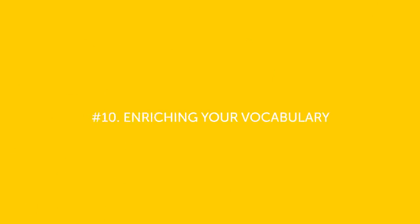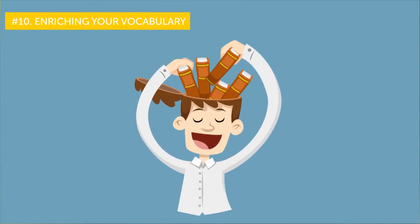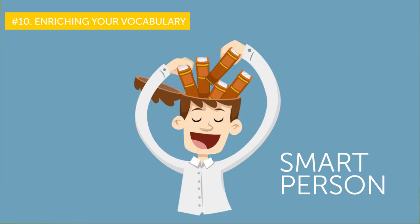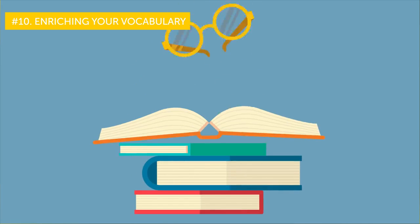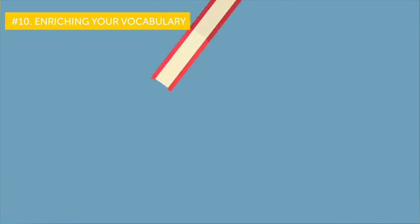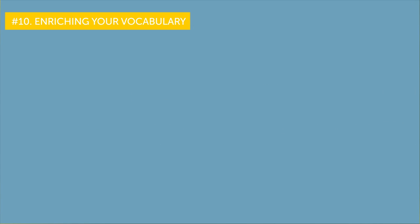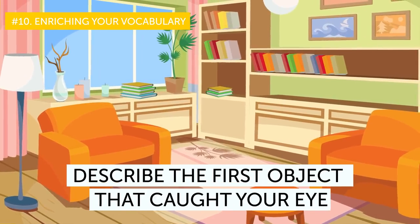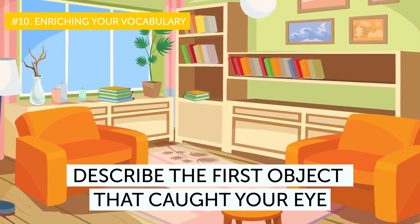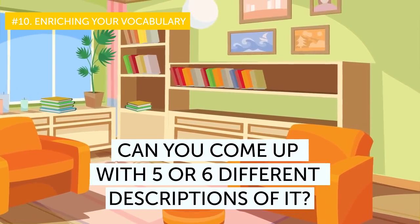Coming down from number 10, enriching your vocabulary. A rich vocabulary is a sign of a smart person, isn't it? Reading books is an obvious way to become smarter. However, not all of us honestly have time for that these days. Here's a solution. This one-minute exercise will help you find new ways of saying beautiful and comfortable. Look around. Now, describe the first object that caught your eye. That pen on your desk, for example. Can you come up with five or six different descriptions of it?